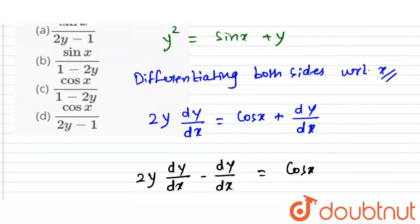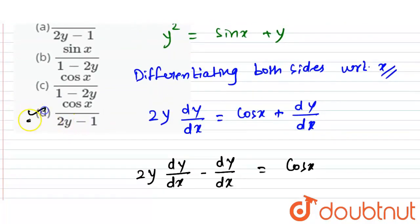Which option is cos x upon 2y minus 1? Option number d is correct. Cos x upon 2y minus 1.